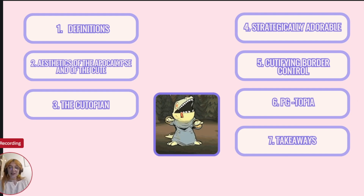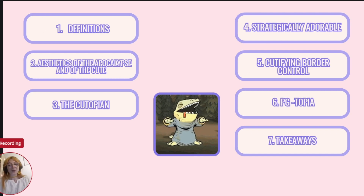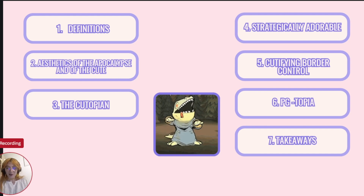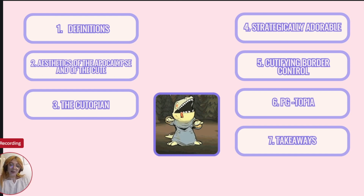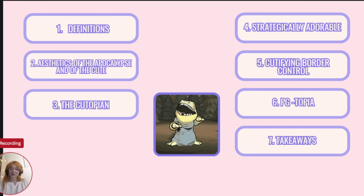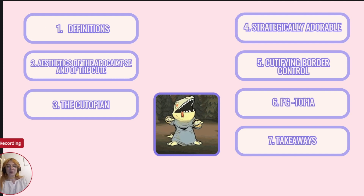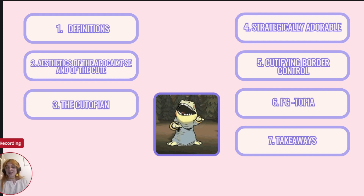Next, we'll dive into specific examples of how these themes are used in games. Strategically adorable, focusing on games that use cute aesthetics in strategy games. Cutifying border control, which looks at how games like Little Guardsman approach authoritarianism. And finally, Peach Utopia explores how media aimed at younger audiences simplifies and softens dystopian themes, making complex political and social issues more accessible and palatable. We'll end with some key takeaways and reflections on the dangers and potential of using cute aesthetics in games to explore or obscure serious historical and political narratives.